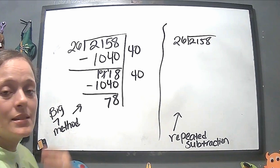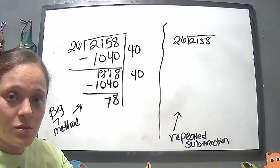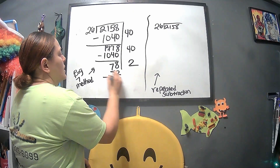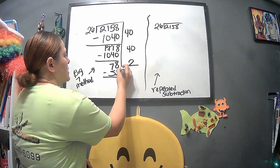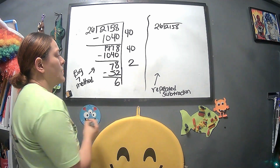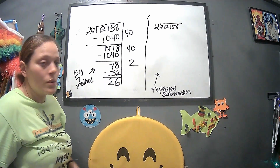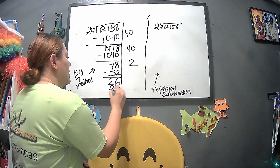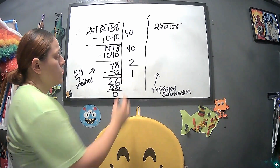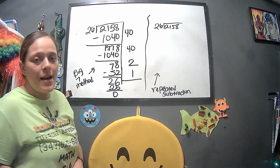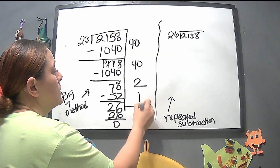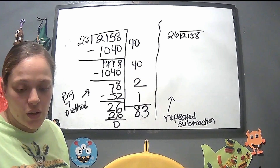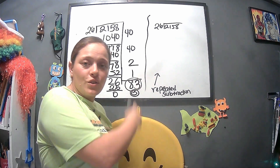26 times 2 is 52. Subtracting: eight minus two is six, seven minus five is two — leaving 26. Then 26 divided by 26 is one. Adding up our quotients: 40 plus 40 is 80, plus two is 82, plus one is 83. So 2158 divided by 26 equals 83.